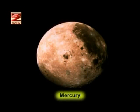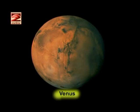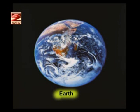Mercury is the smallest planet of our solar system and the one nearest to the Sun, but it does not have a moon. The planet nearest to Earth is Venus, also called the morning star or evening star. It does not have any moon and it rotates from east to west around itself, unlike other planets which rotate from west to east.